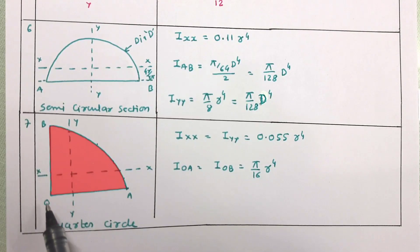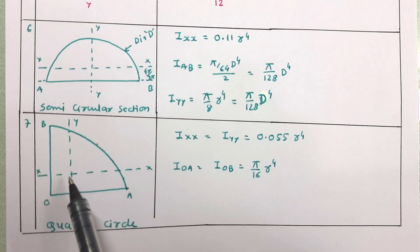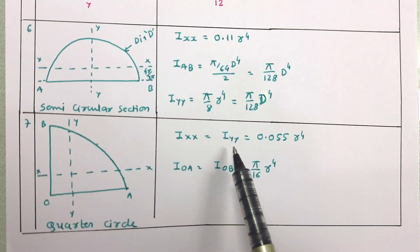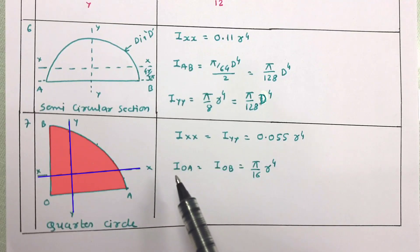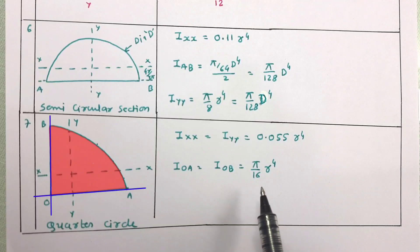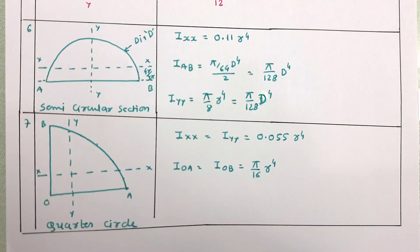The last section is the quarter circle of radius r. The moment of inertia about the centroidal xx and yy axes are equal: I_xx = I_yy = 0.055r⁴. The moment of inertia about the reference axes OA and OB are also equal: I_OA = I_OB = π/16 × r⁴. These are the important equations for moment of inertia of standard sections, very useful for solving related problems. Thank you for watching — please write any doubts in the comment box.